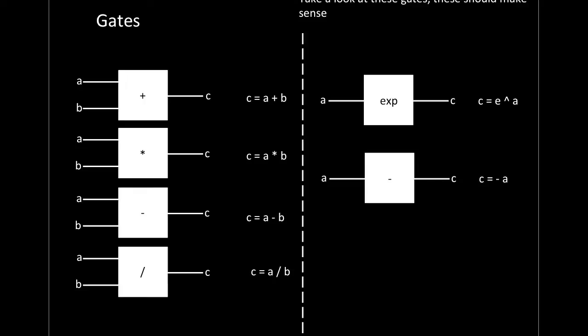What are real gates? Let's take a look at this slide. For the first one, there's an addition gate: we have inputs A and B, and A plus B equals C — the gate adds A and B and puts the result into C. There's also a multiplication gate where A times B equals C, and a subtraction gate where A minus B equals C. These gates perform a function based on their inputs and produce an output.